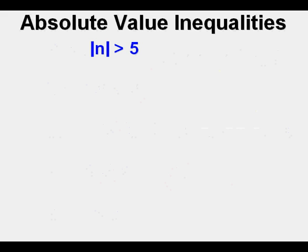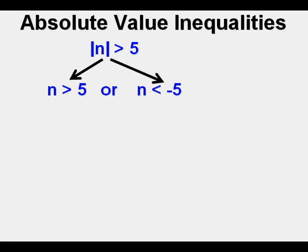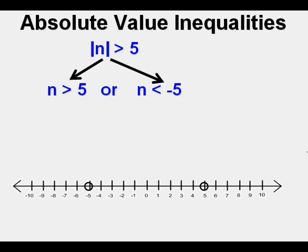Let's do the first one and graph it. The absolute value of n is greater than 5. Since it's the greater than sign, it's OR — more is OR — so it will go two ways. The one on the left is n is greater than 5, and the one on the right is n is less than negative 5. We mark both boundary points on a number line. These are open points because of the greater than and less than symbols, and the arrows are drawn outward — left to negative infinity and right to positive infinity. In set notation, we call it: n such that n is all real numbers less than negative 5, or all real numbers greater than 5. Remember, this is what more is OR looks like.